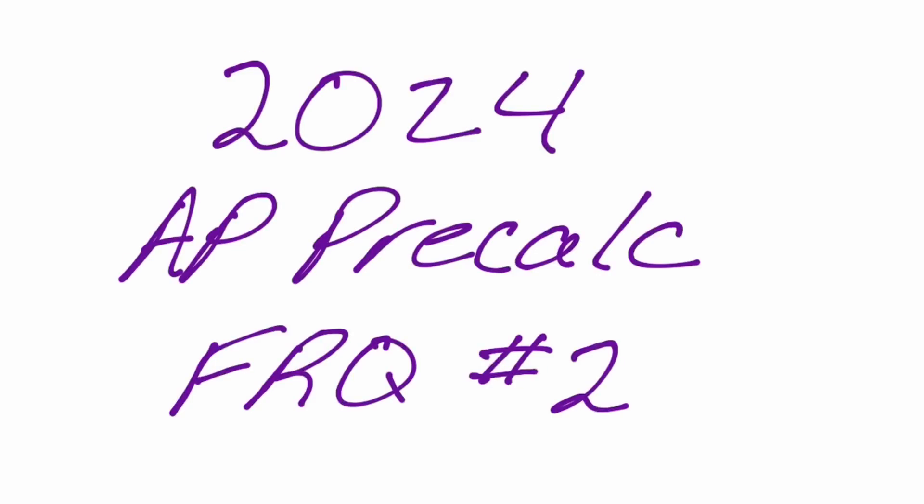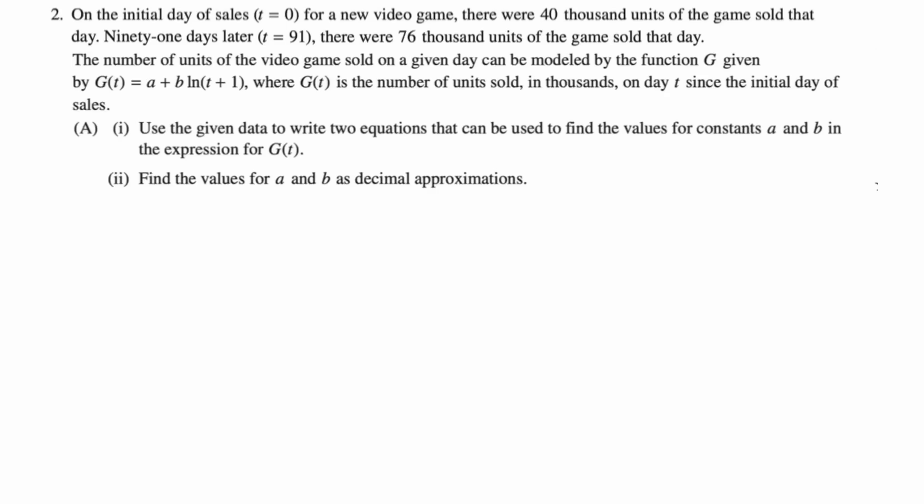In this video, we are doing number two from the 2024 AP PreCalculus exam. Let's take a look at it. So initial day of sales, t equals zero for a new video game, there were 40,000 units of the game sold. Ninety-one days later, which is t equals 91, there were 76,000 units of the game sold. The number of units can be modeled by G(t), which is a plus b natural log of t plus one, where G(t) is the number of units sold in thousands on day t since the initial day of sales.